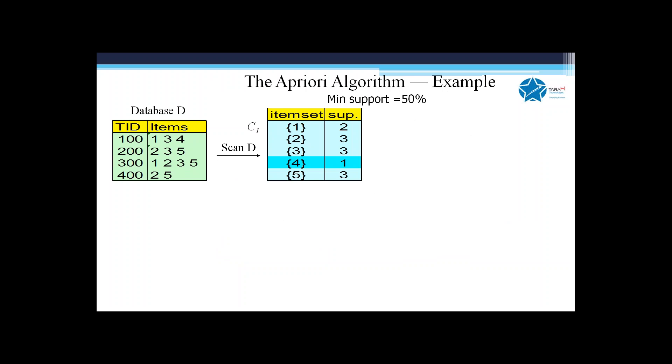So what we do is look at the filter which contains four elements, each of size equal to one. Now we expand each of them with one additional element from the original transaction database.